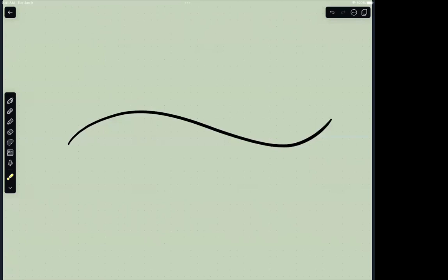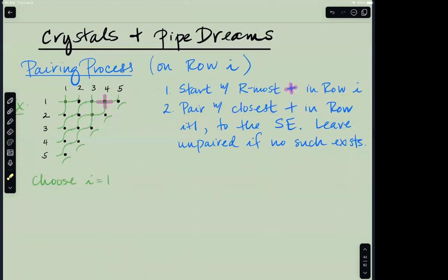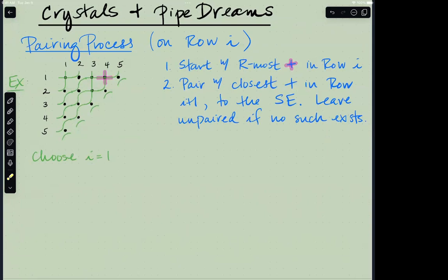Now what I'd like to do is blend these two stories together. The first half was focused on crystals and Demazure crystals as a special family. I would like to place a crystal structure on pipe dreams. Much like the tableau case, which I showed an example of in detail, we will start with a pairing process. I also have to decide what row I'm focusing on. Look at row i, and then start with the rightmost cross in row i.